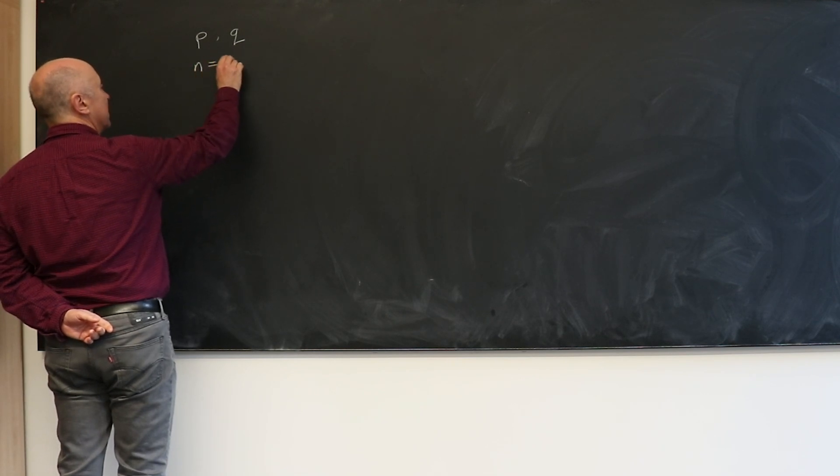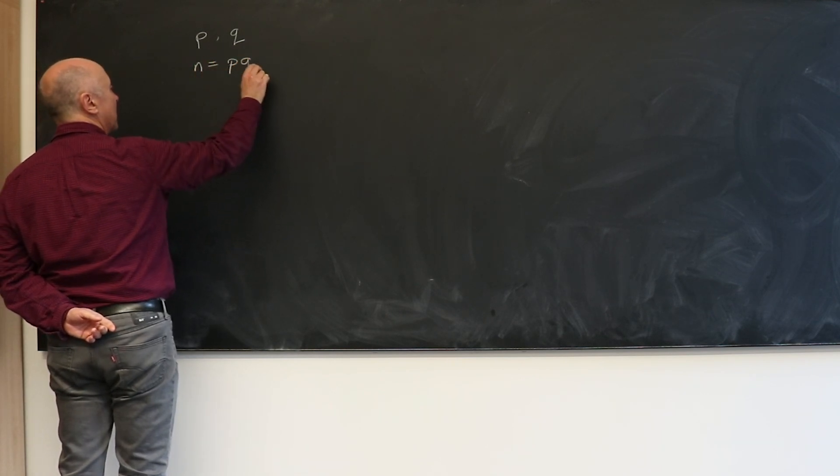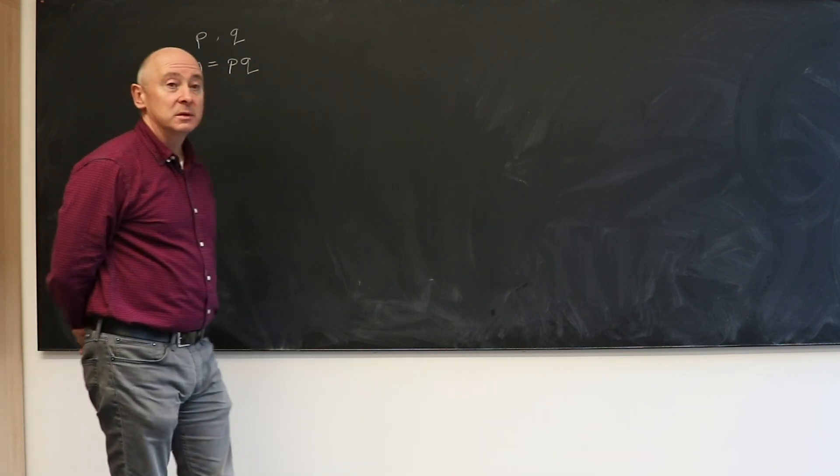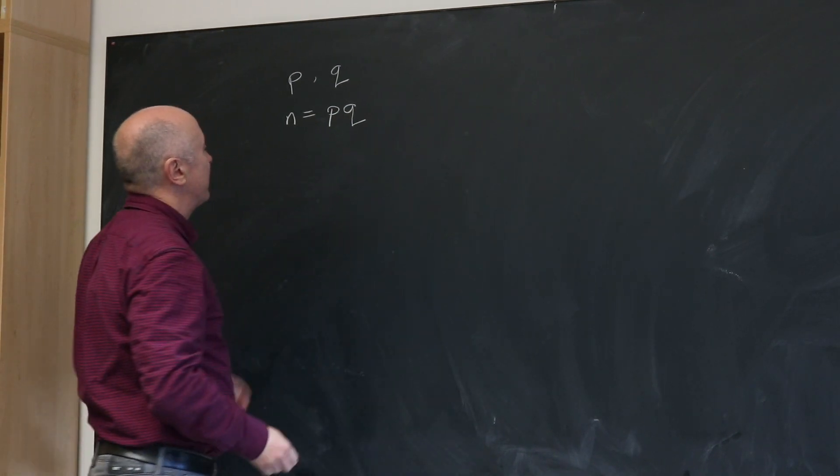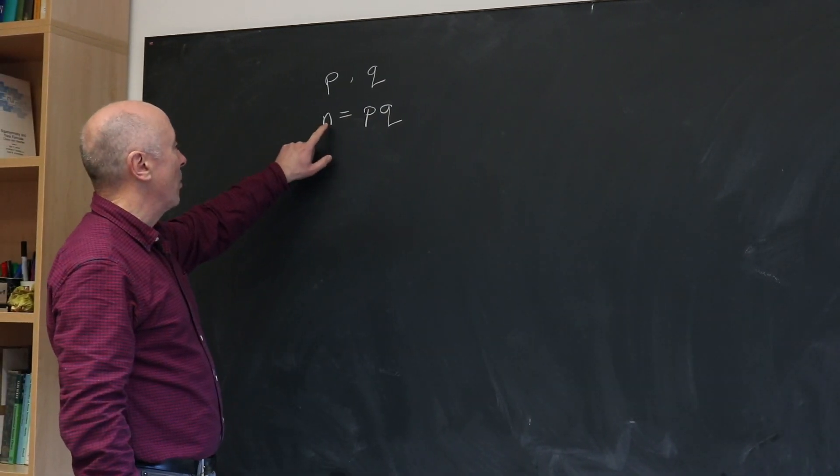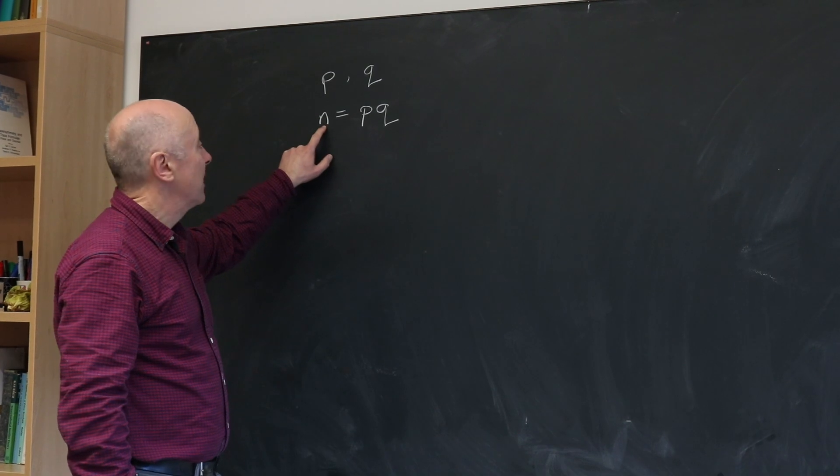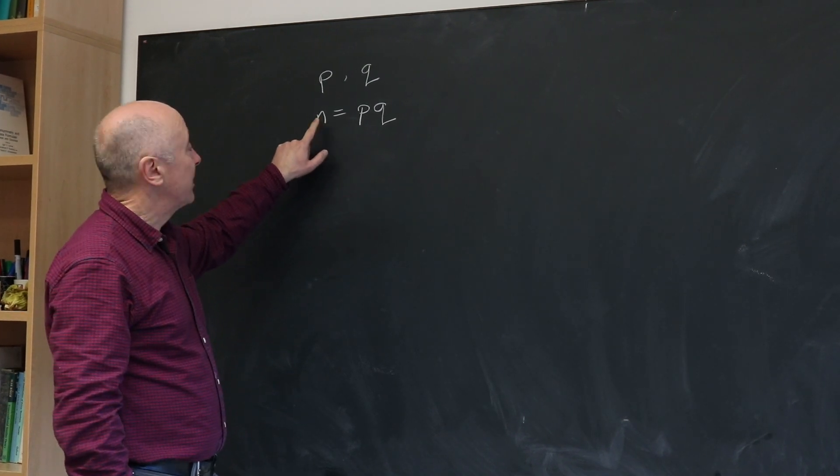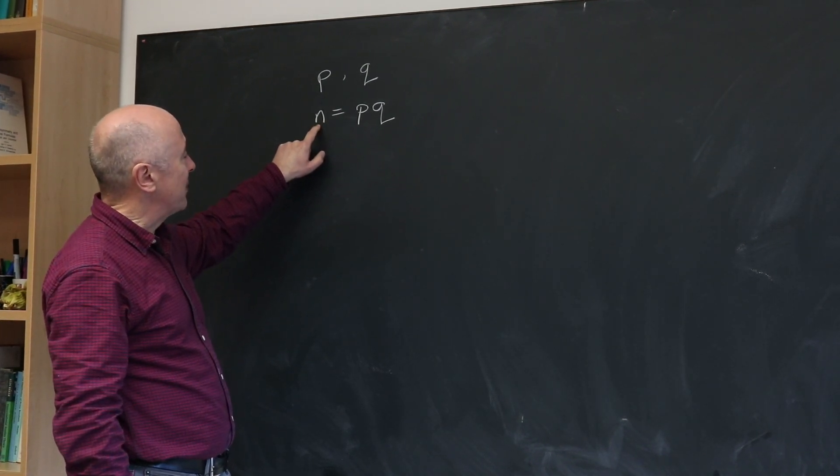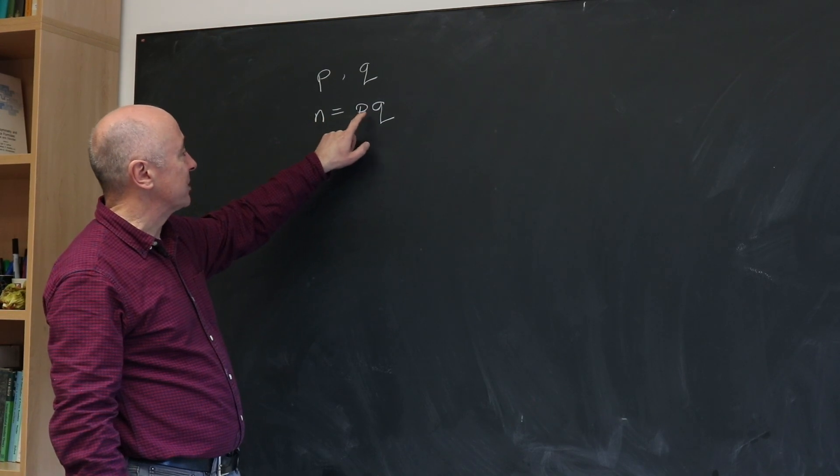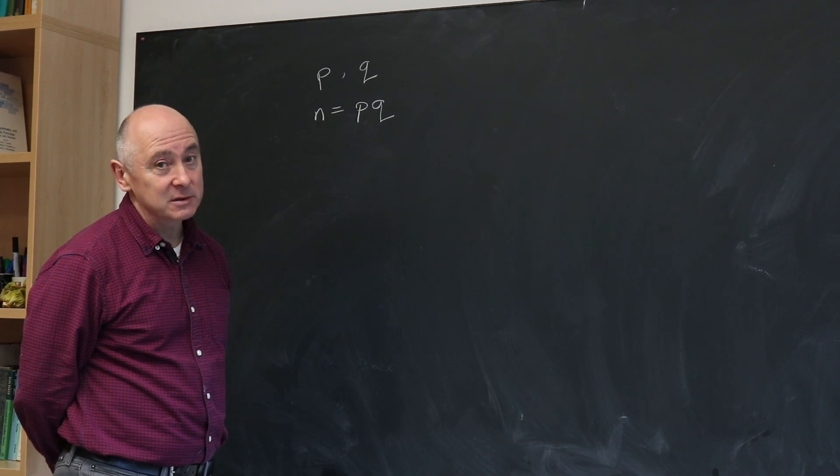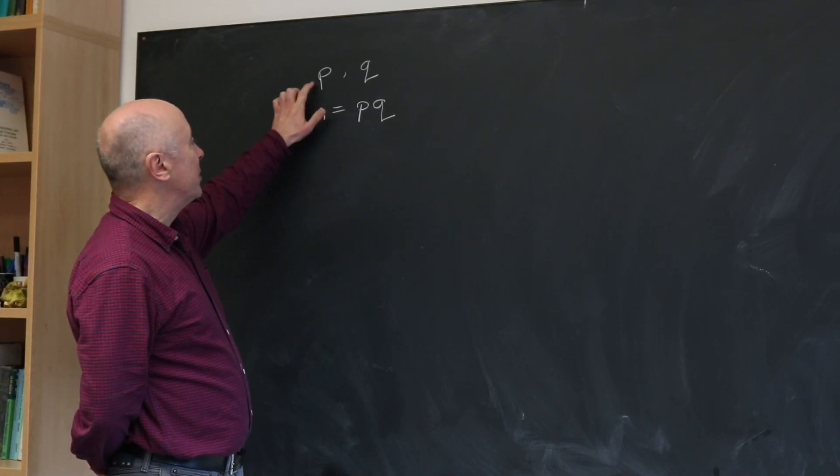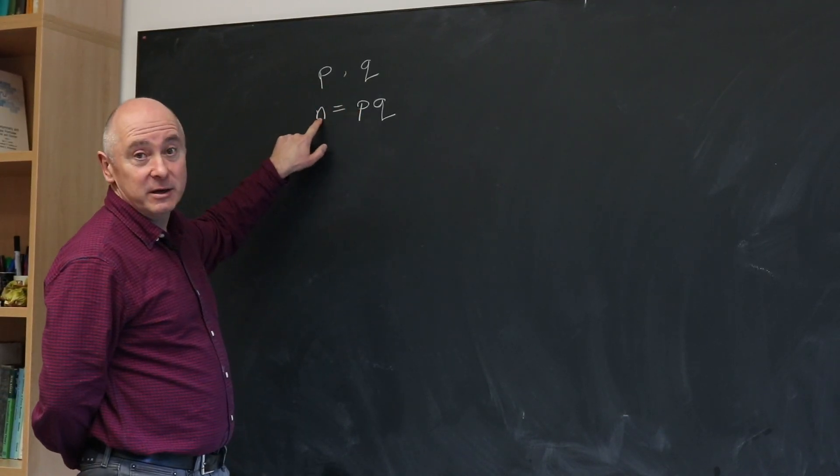So N is P times Q, and N is called the public key. This is a number which we will advertise; anyone can see N. But it's very hard for people to separate N back in terms of the product of P and Q.